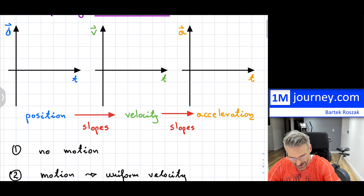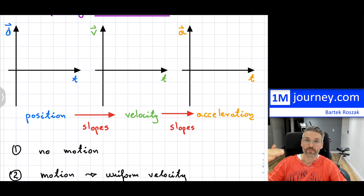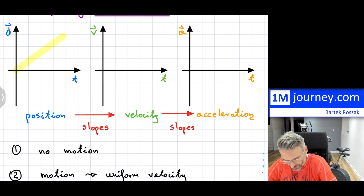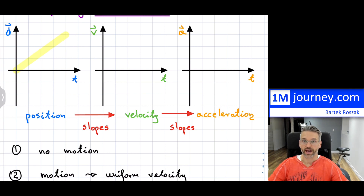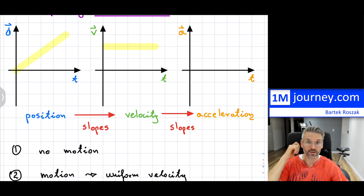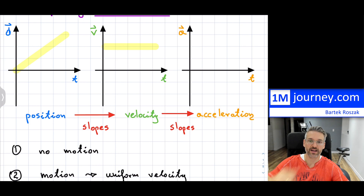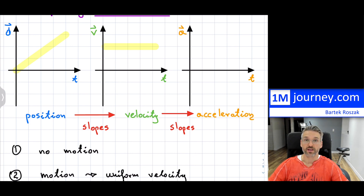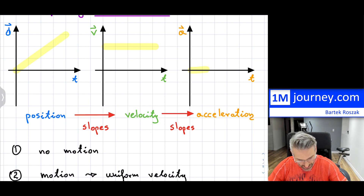If you have a positive slope on the position-time graph, your velocity would be constant — just a flat line on the velocity graph, because we're looking at the slope, which is rise over run. It's a straight line, so we have a flat line on velocity on the positive side. The acceleration, because it's uniform and not changing, is flat, looking at the slope — which means it's actually zero.